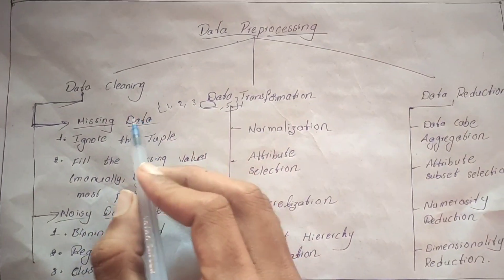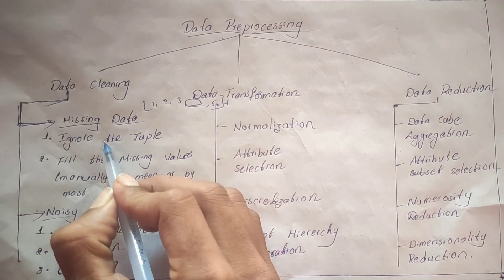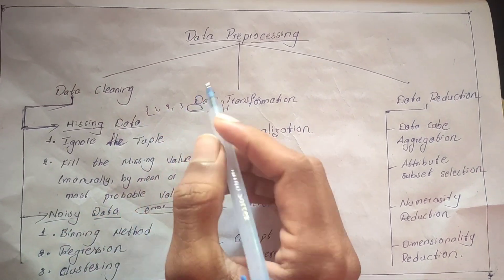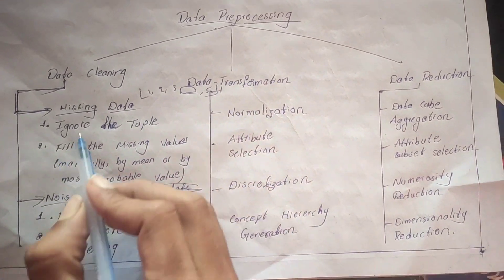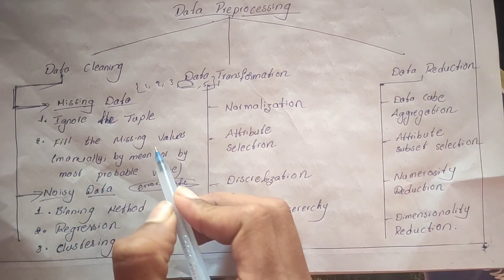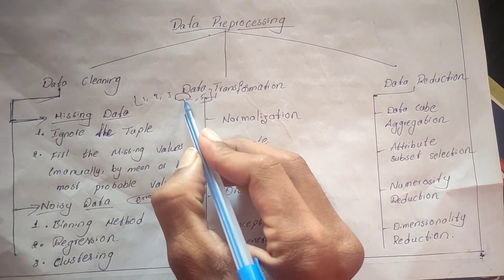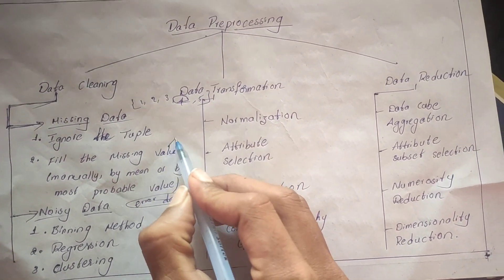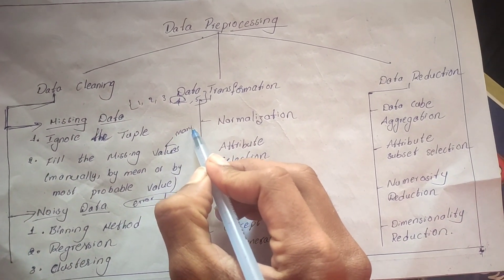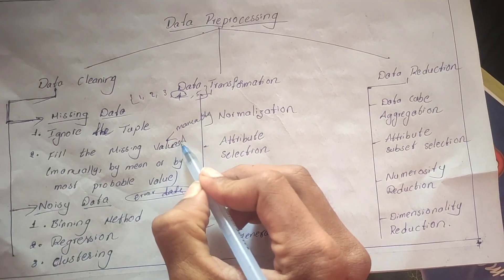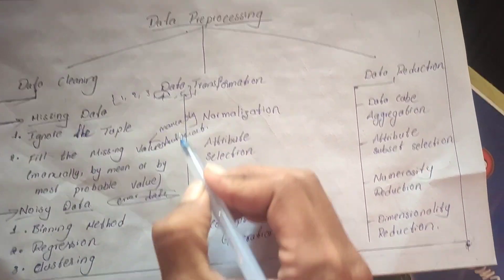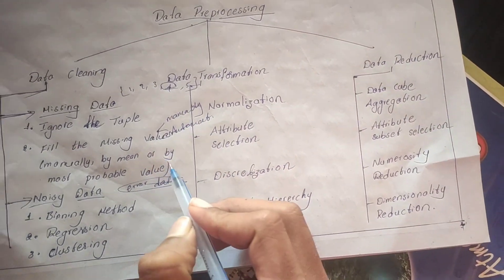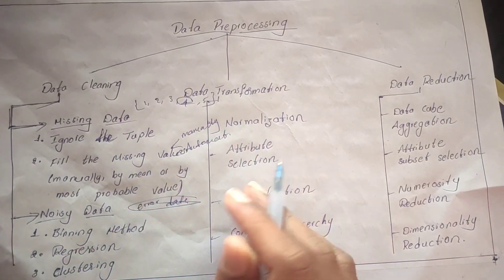Missing data can be cleaned by ignoring the tuple — we ignore that data entry in the dataset. The next approach is filling the missing values, either manually or automatically, using the mean, median, or most probable value.